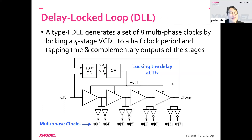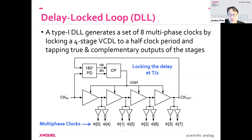The next block is the delay lock loop. This one takes the input clock, which has a multiplied frequency — the frequency multiplied by the PLL — and this one locks a delay line into a half period. Then by tapping the middle points on the delay line, it generates multiple phases of the input clock.